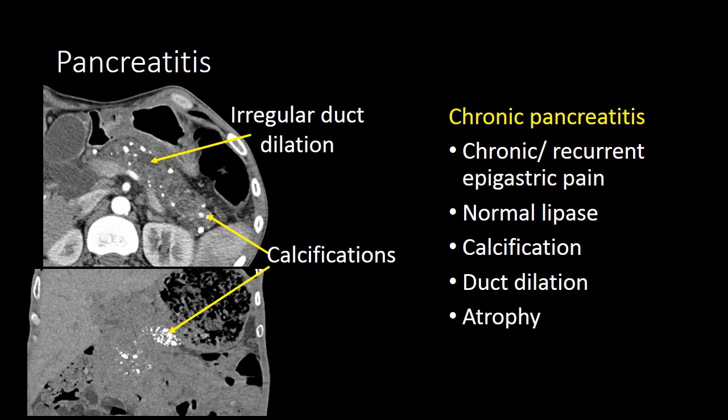Patients with chronic pancreatitis typically present with recurrent or chronic epigastric pain. Their lipase is often normal, and when they undergo a CT scan, you can identify calcifications scattered throughout the pancreas. The pancreatic duct is typically dilated and irregular, and there may be loss of the pancreatic tissue volume.